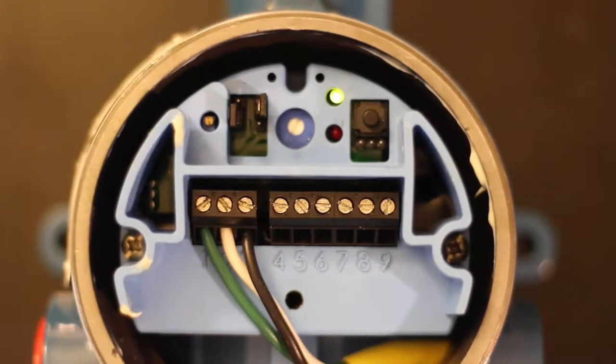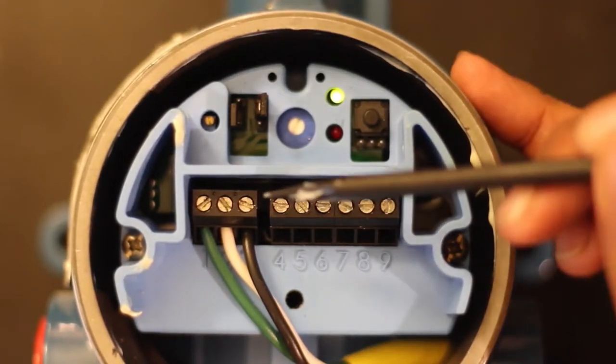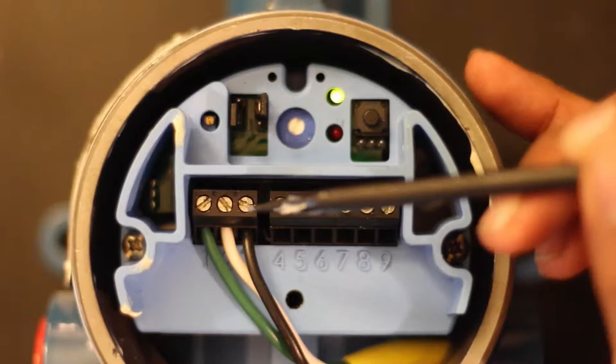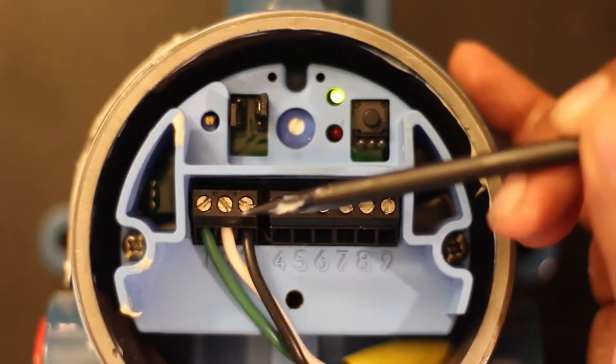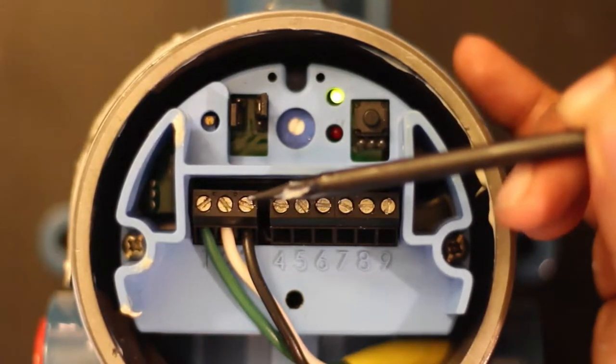We currently have a line powered point transmitter hooked up to 120 volts AC. To start, let's go over the anatomy of this particular unit. You have your universal power supply connections. This particular unit will take in 24 volt DC, 120 volt, or 220 volts AC.